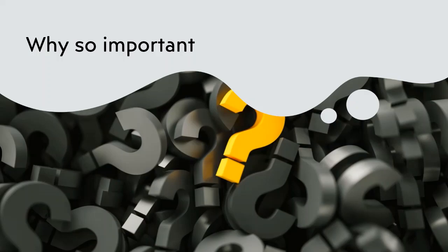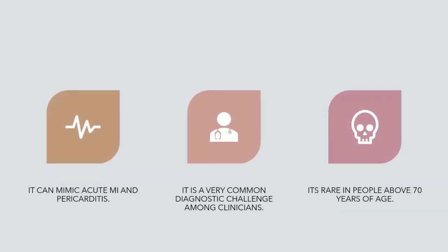So why is it important? Basically since it can mimic acute MIs and pericarditis, it is very common that we misdiagnose these. Either we may over diagnose benign early repolarization or we miss MIs and pericarditis. And one thing to note is that it is very rare in people above 70 years old. So it is more common in people younger than 50 years old.